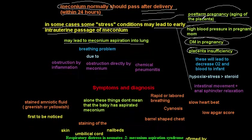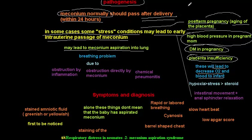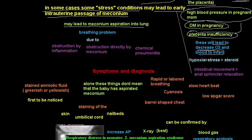All these conditions lead to decreased O2 and blood flow to the infant. Whether due to aging of the placenta from post-term pregnancy (more than 40 weeks) or pre-eclampsia causing placental insufficiency, the result is decreased O2 to the infant, leading to hypoxia, which is a stressful condition.